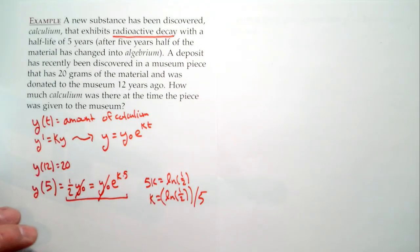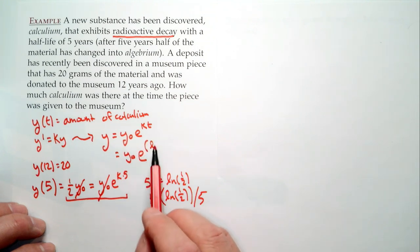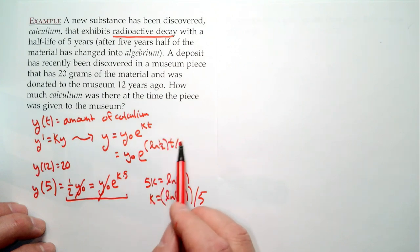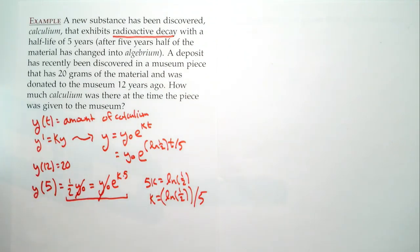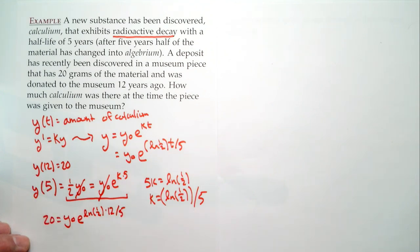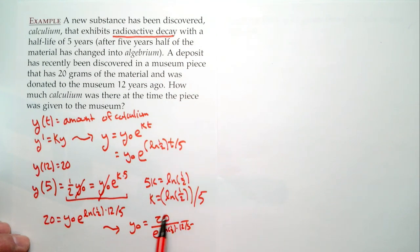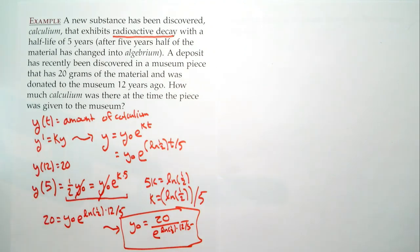Using the other piece of information — after 12 years there are 20 grams: 20 = y₀·e^(ln(1/2)·12/5). We only don't know y₀, so we conclude y₀ = 20 / e^(ln(1/2)·12/5). That's some number, and that's the kind of computation you can do. Because exponential growth/decay is so common, we'll move on to more interesting examples.